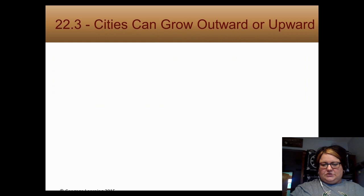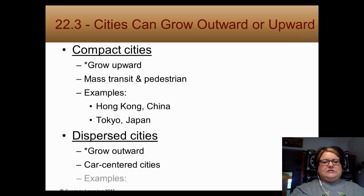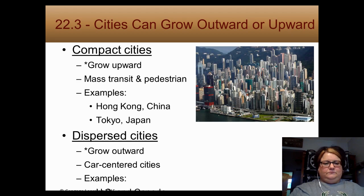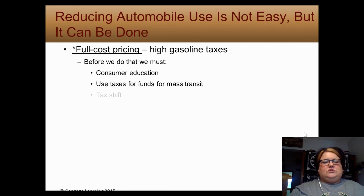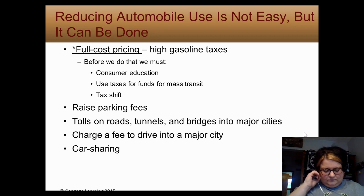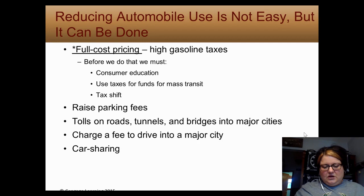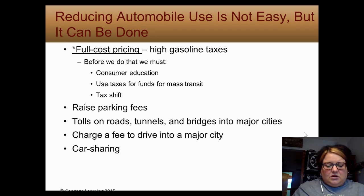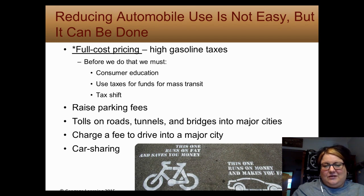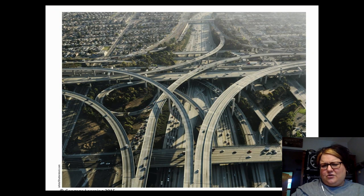We talk about two different types of cities — compact versus dispersed. Compact cities, which we don't really do in the US, grow up. Hong Kong is an example with mass transit, subways, and walkability. In the US we grow out — Milwaukee is an example. To reduce automobile use, options include increasing the price of gas for full cost pricing, raising parking fees, changing the tax shift by decreasing income tax while increasing gas prices, and using tolls. In Singapore, cars have electronic sensors that charge you every time you enter a major city. In Shanghai, a license plate costs $9,000 as a deterrent.